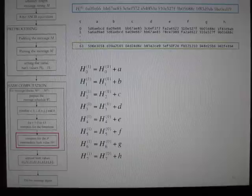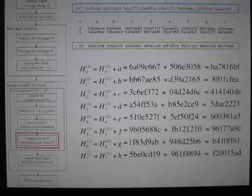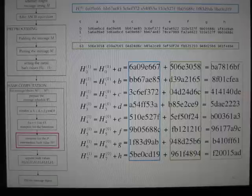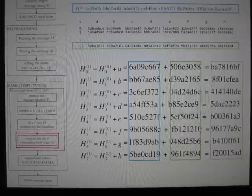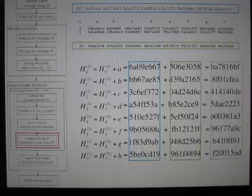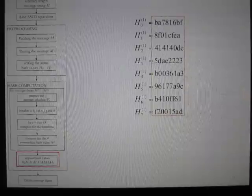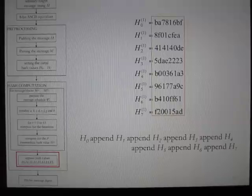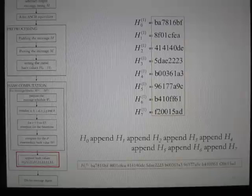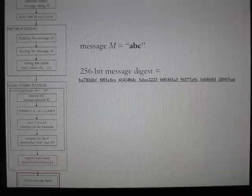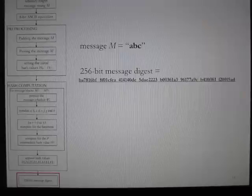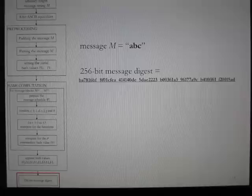The intermediate hash value can now be computed. From the initial hash values H0 to H7 — which were also used as the initial A to H variables — after 64 rounds, a new set of A to H working variables is derived at T equals 63. The parallel equations are used to compute the intermediate hash values. Since this is a one-block message, this intermediate hash value is already the final hash value. The last step is to append the final hash values, yielding the 256-bit message digest. The 256-bit hash value of the input message 'abc' (lowercase) is therefore shown; for SHA-256, regardless of the input message size, the hash will always be 256 bits.